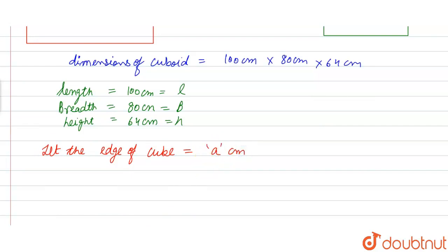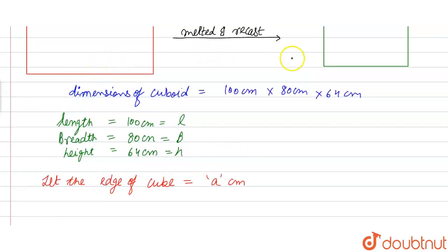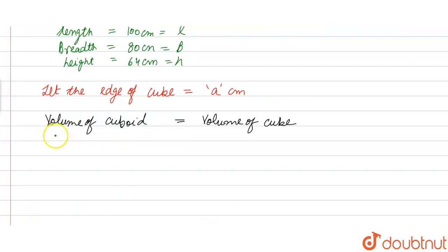Because cuboid is melted and recasted, we can say that volume of cuboid is equal to volume of cube. So volume of cuboid is multiplication of its dimensions, that is l into b into h is equal to volume of cube, a into a into a.